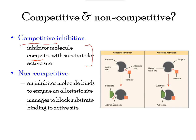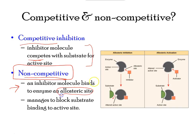In non-competitive inhibition, an inhibitor molecule binds to another site on the enzyme called the allosteric site, completely locking the enzyme. An example is poisons — when ingested, they destroy the organism by locking the enzyme.